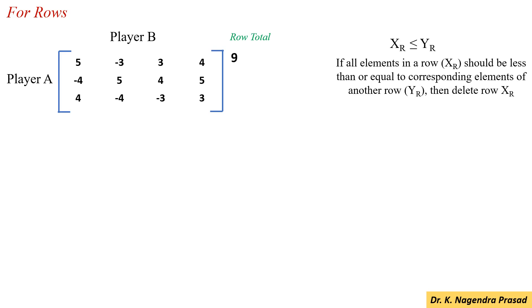For the second row, the row total is minus 4 plus 5 plus 4 plus 5, equal to 10. And for the third row, the row total is 4 minus 4 minus 3 plus 3, which is 0.